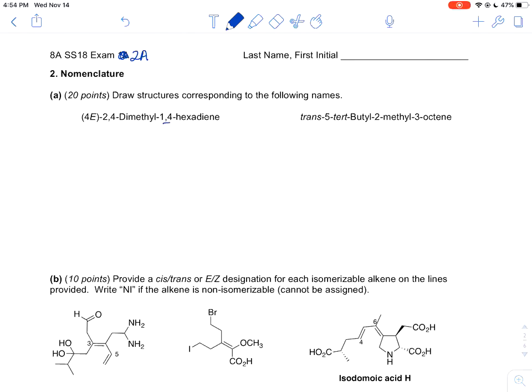We're going to start with 1,4-hexadiene and this has six carbons. One, two, three, four, five, six.